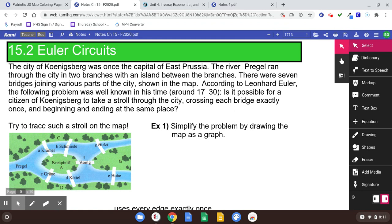According to Leonard Euler, the following problem was well known in his time, around 1730. Is it possible for a citizen of Königsberg to take a stroll through the city, crossing each bridge exactly once, and beginning and ending at the same place?